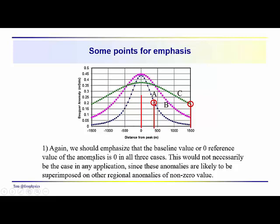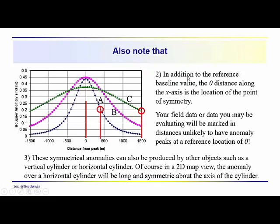So there are some points to emphasize here. This baseline value, when you're collecting data, you will probably never see a zero reference point for any particular anomaly. These anomalies might be from three different areas, three different places in your survey area, and they would be superimposed on some regional background gravitational field which would be non-zero. So that's a point to keep in mind. Another thing to keep in mind is that you're never going to see an anomaly centered right at zero. On your 2D survey area, you're going to have an X and Y value associated with this, your X and Y coordinates.